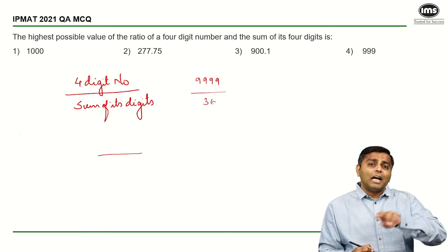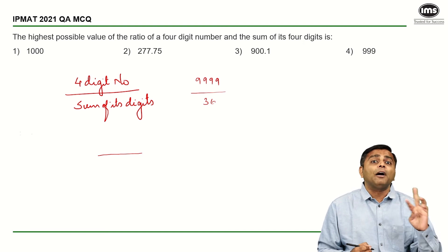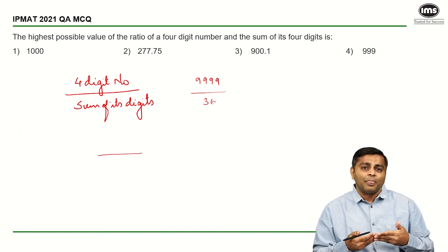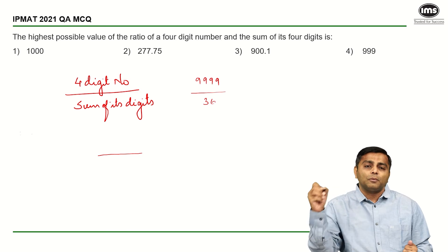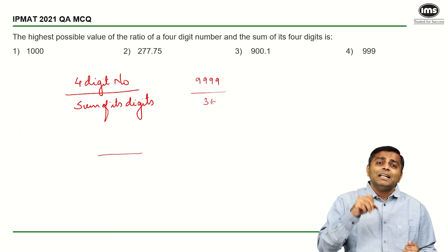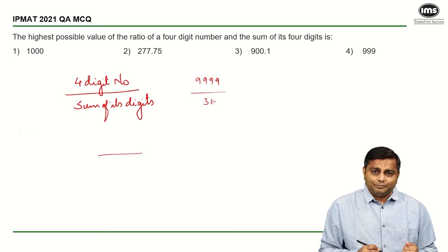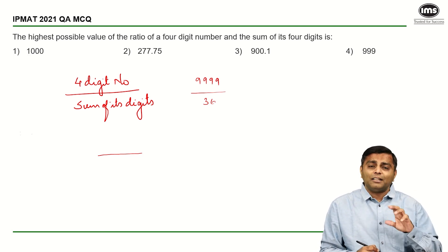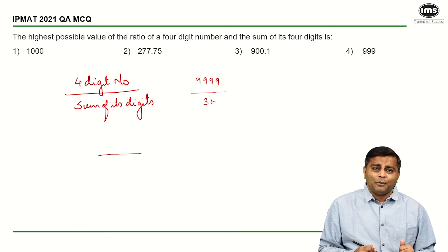But if I have the fourth number as one to minimize the sum, it is going to be one plus zero plus zero plus zero. And with these digits, the maximum number that I can make is 1000. So 1000 upon one, the answer is going to be 1000. So that is one possible value.